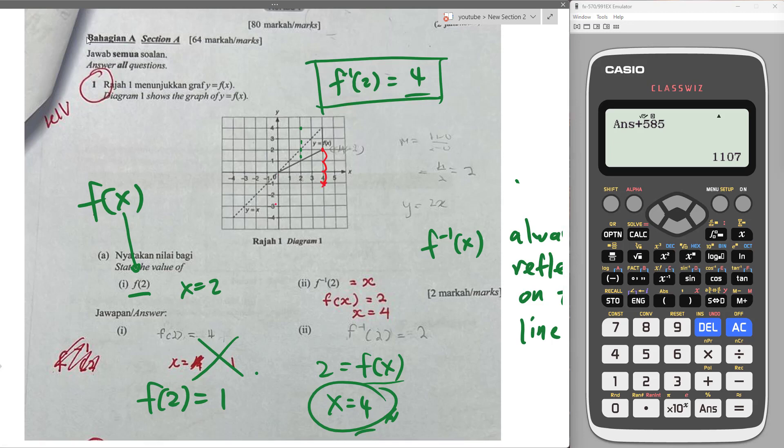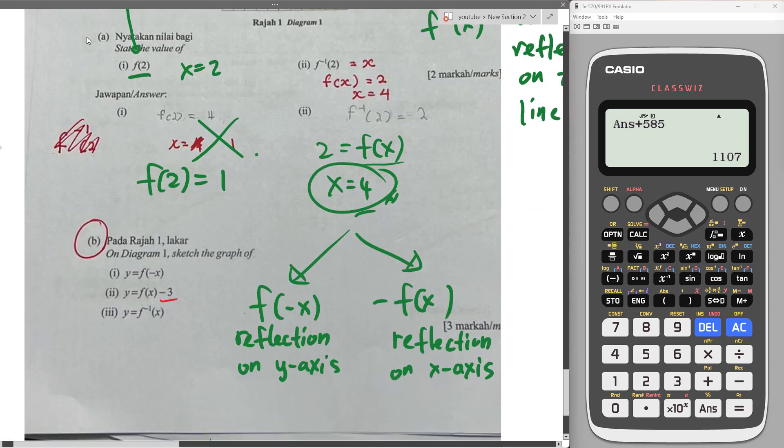And then from 0 going down 3 unit is negative 3, right? Okay, so we're just connecting them. So this one is f(x) minus 3. So same idea is f(x) plus 3. That means whole graph going up 3 unit. Okay, this one you can see all of them is actually coming down 3 units. Then we're done.